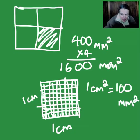Can you see? A hundred, each one of those is a millimeter by millimeter. So one square centimeter, one centimeter squared, equals 100 millimeters squared.